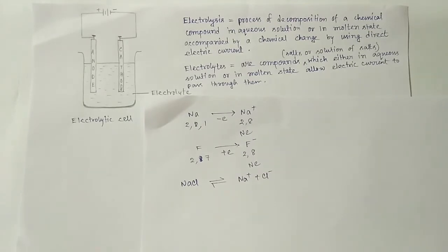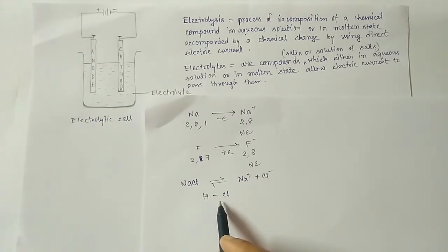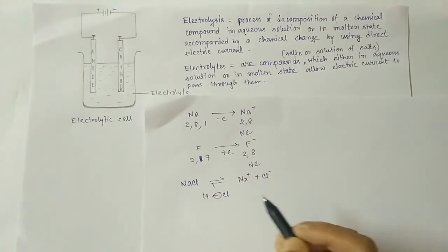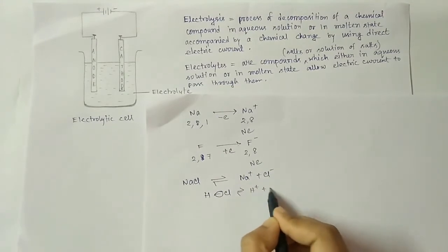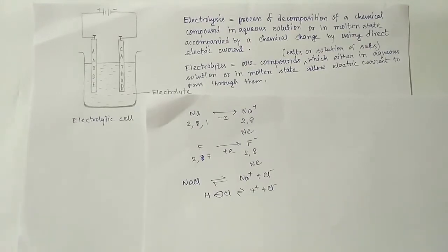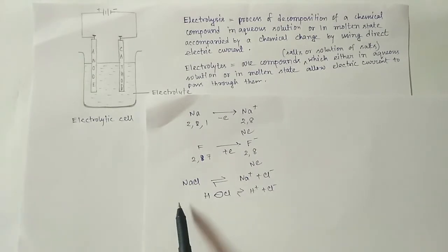Similarly, polar covalent compounds can also conduct electricity. For example, HCl: due to large electronegativity difference, chlorine attracts the bonding electron pair towards itself, making the bond quite vulnerable and easily dissociable in water medium. This makes free charges available, so they also conduct electricity. But non-polar covalent compounds have no charge separation, so they are bad conductors and don't even dissolve in water.